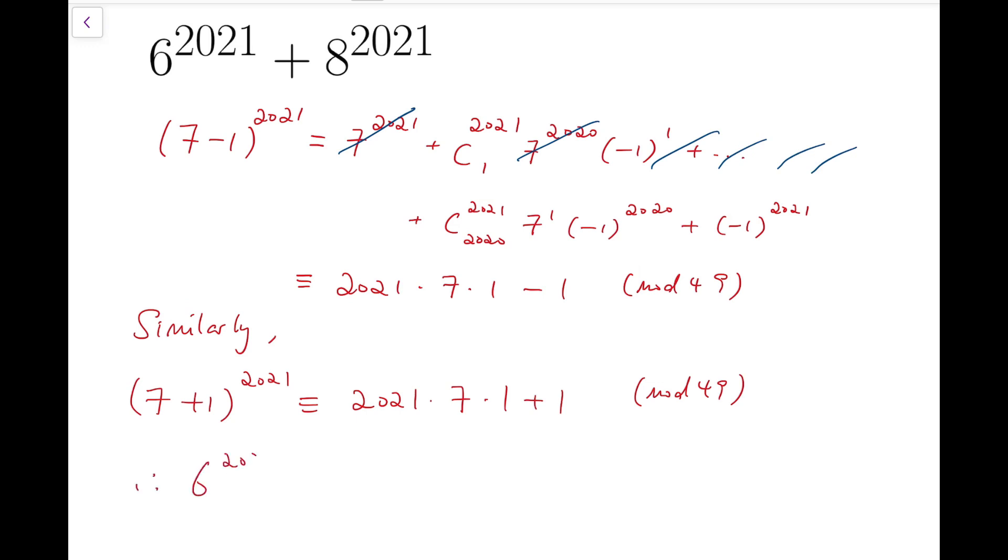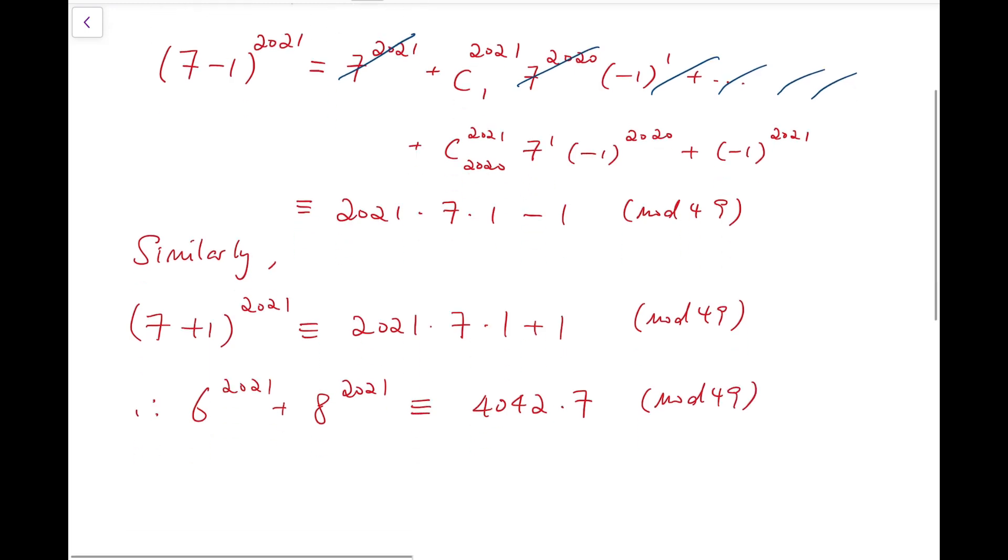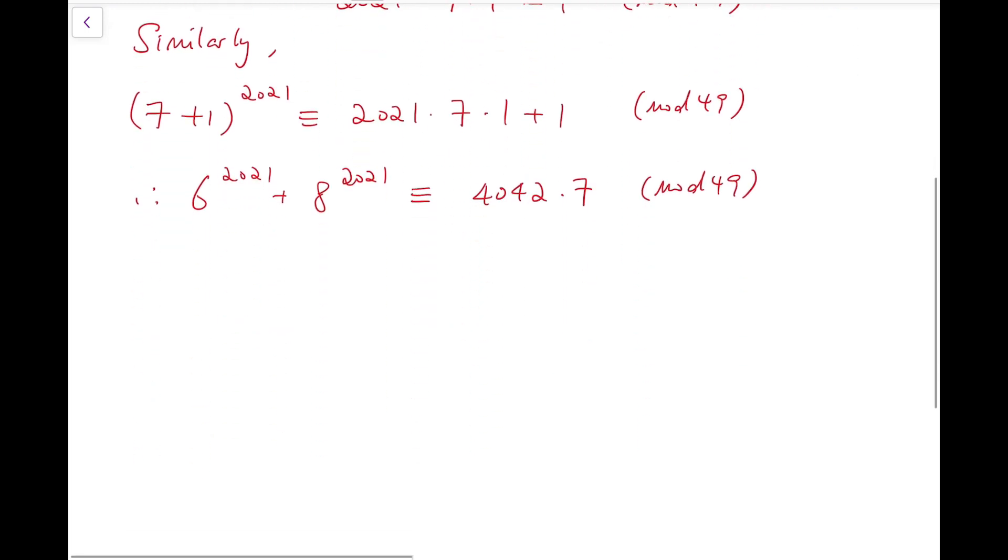So therefore, the sum of the two powers is congruent to 4042 times 7. And so that means...